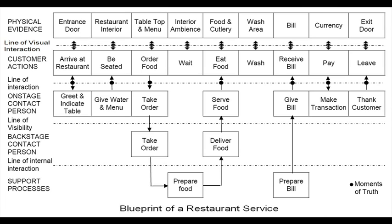Here you see the blueprint of a restaurant service. The customer, who is the king, performs eight actions: he arrives at the restaurant, is seated, orders food, waits for the food, eats the food, washes, receives the bill, pays, and leaves. For each of these actions, the customer may be interacting with the on-stage contact person from the service supplier side.